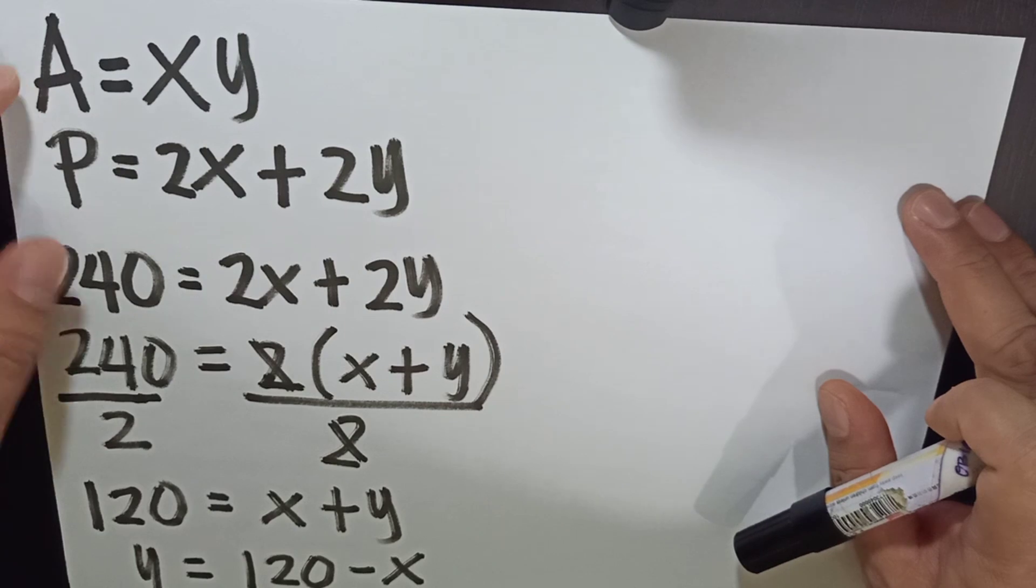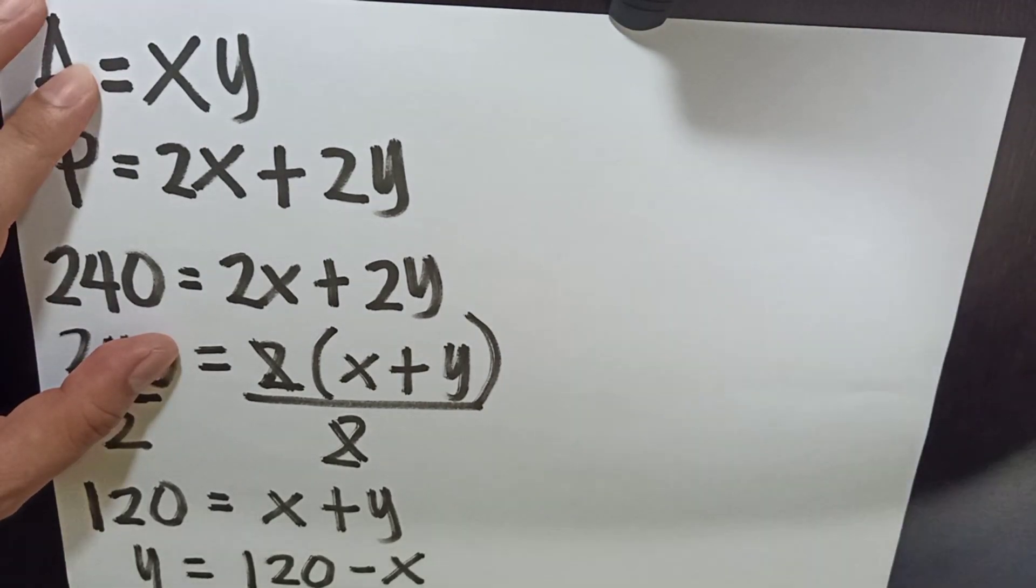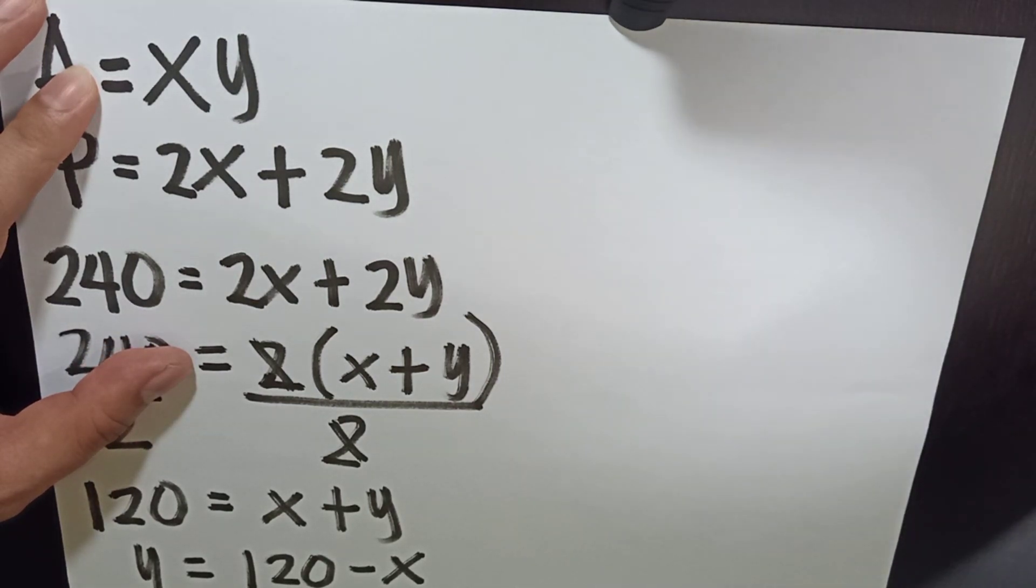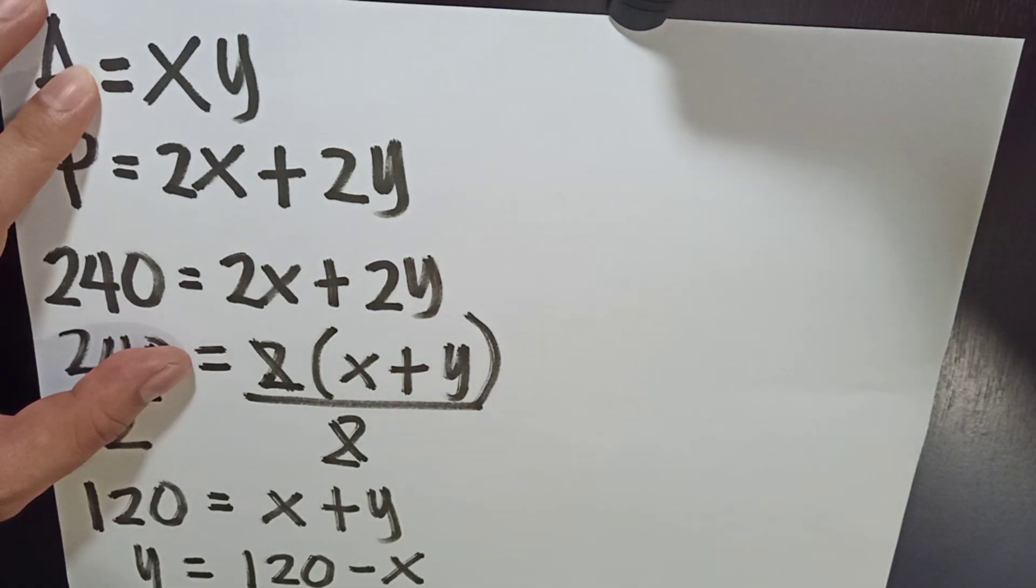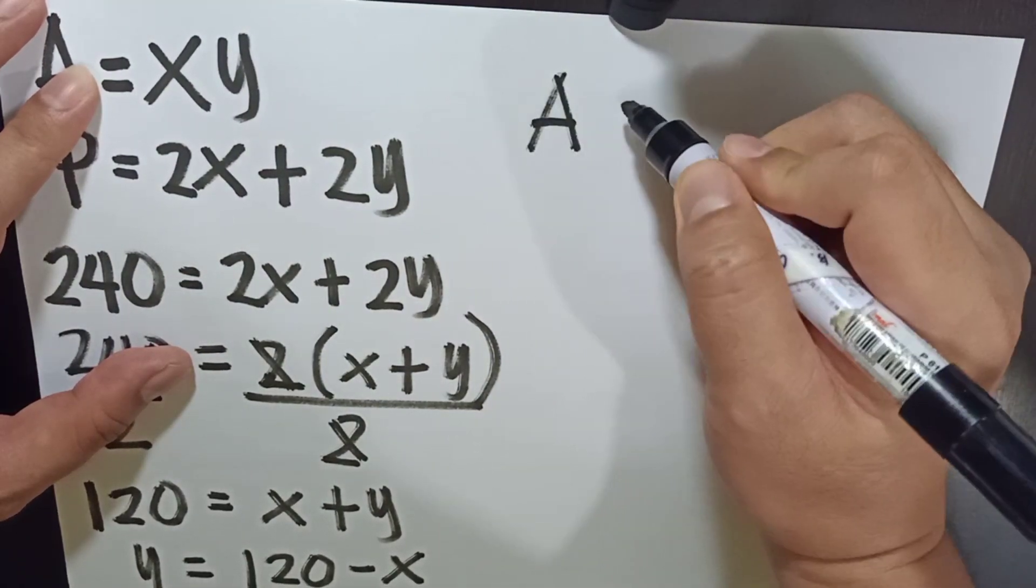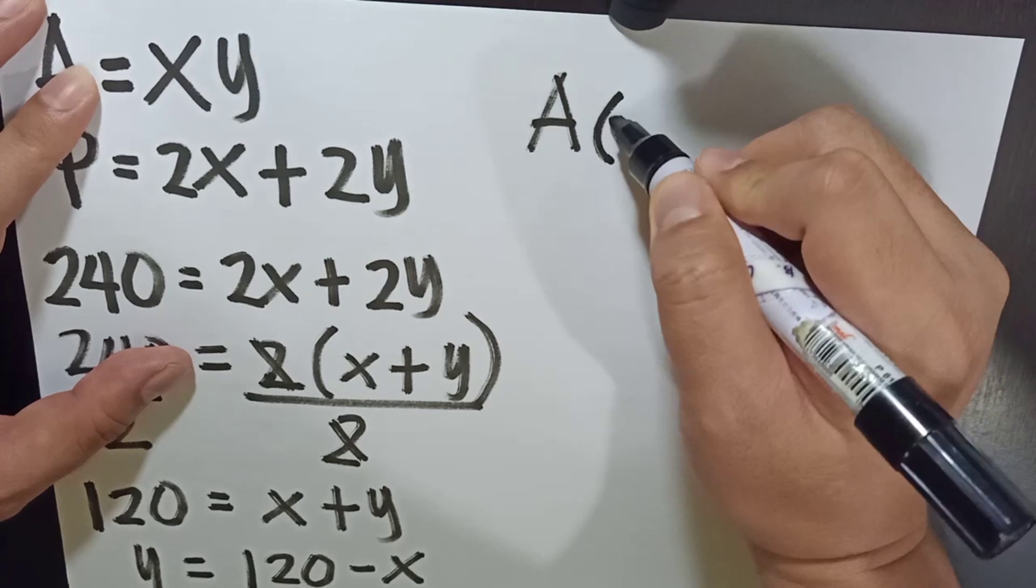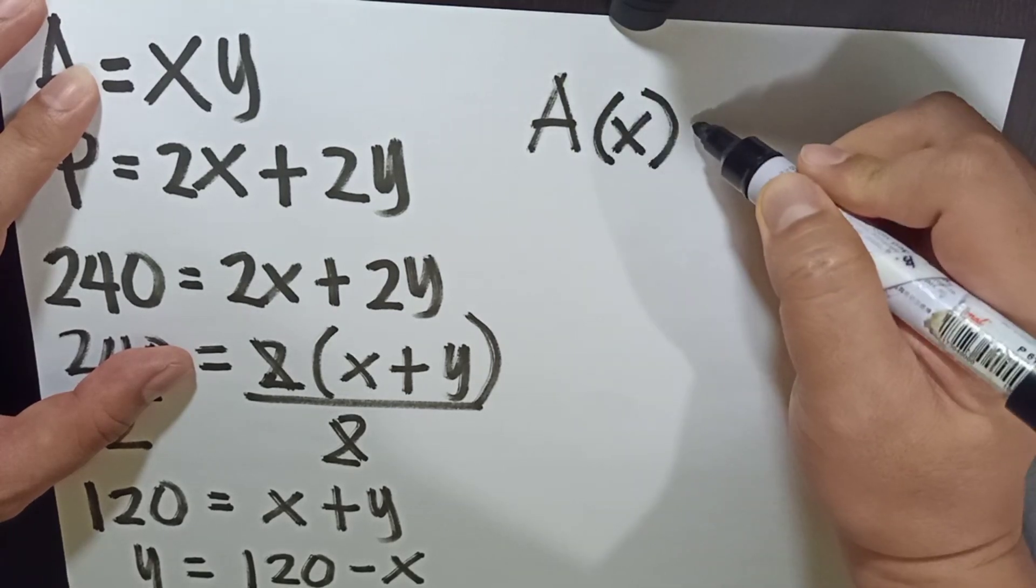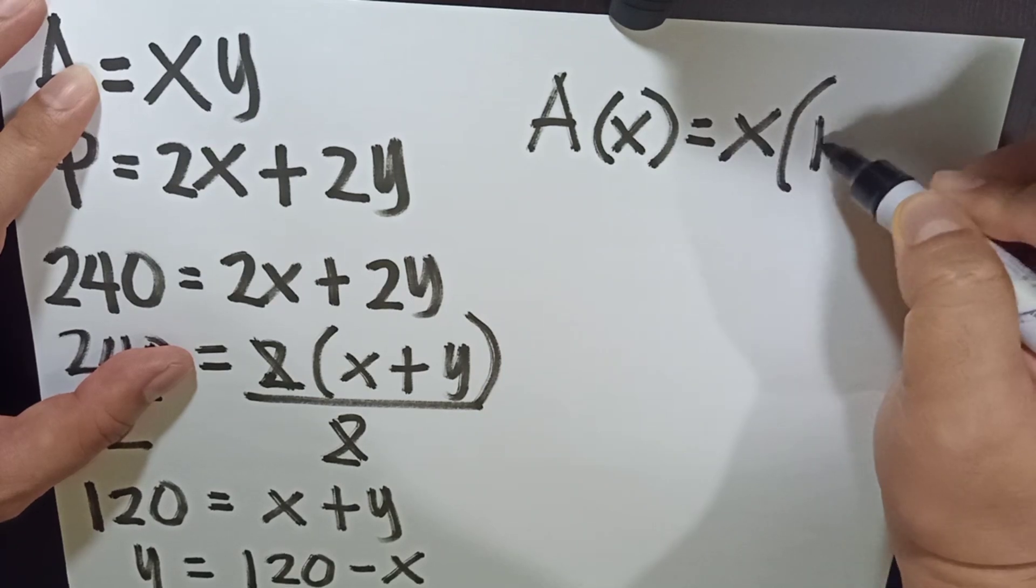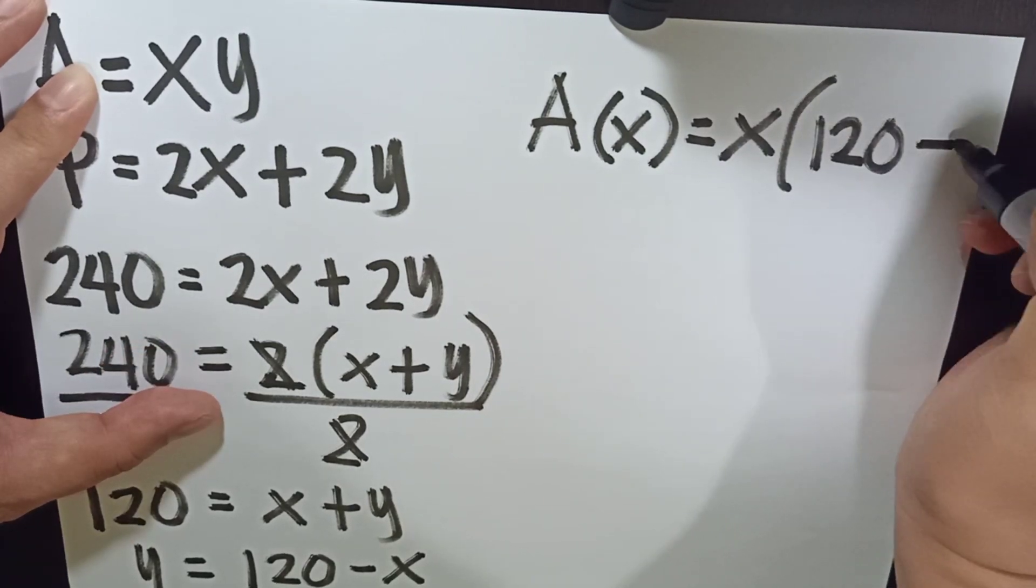We are not yet done. Since we are going to express the area of the field as a function of its width, it will become now A as the area as a function of x. This is equal to x times 120 minus x.